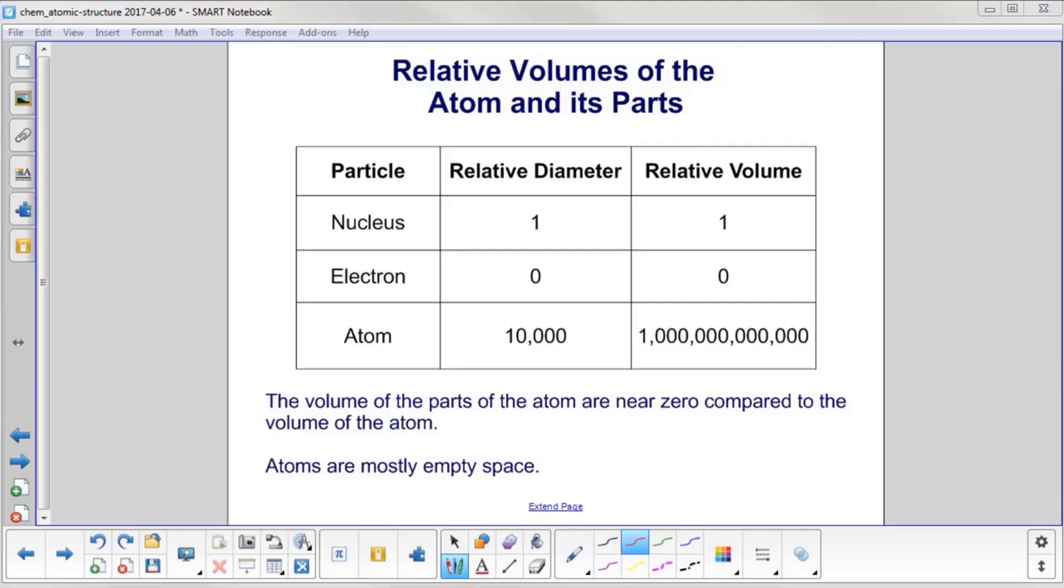To show what the atom looks like, we're going to use this chart. Let's say the nucleus has a relative diameter of 1. That means it has a relative volume of 1. You just cube your radius. Volume, of course, is 4 thirds pi r cubed.